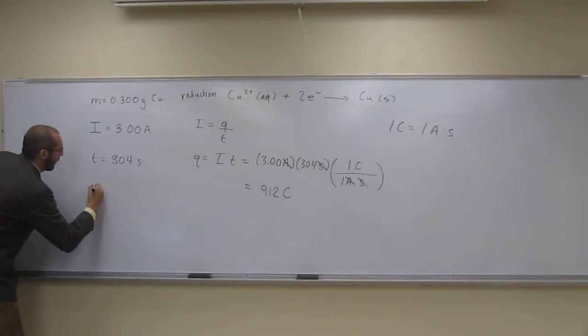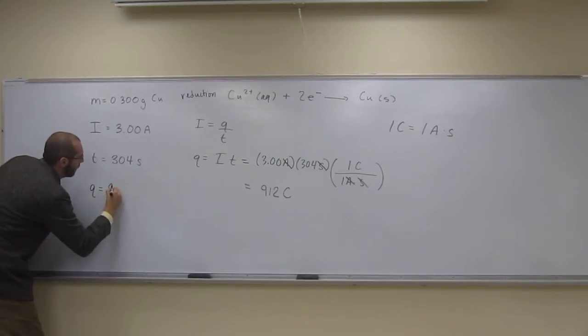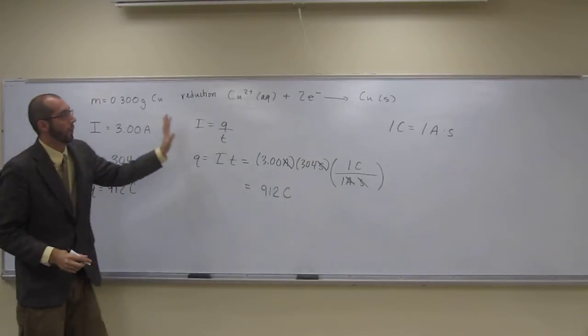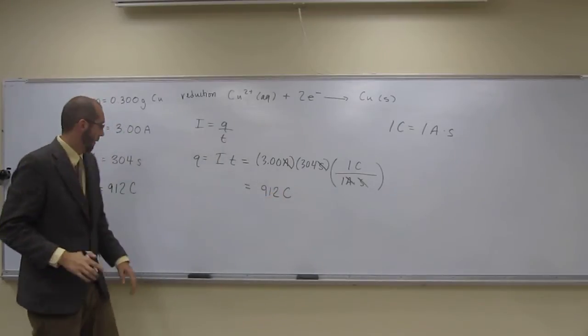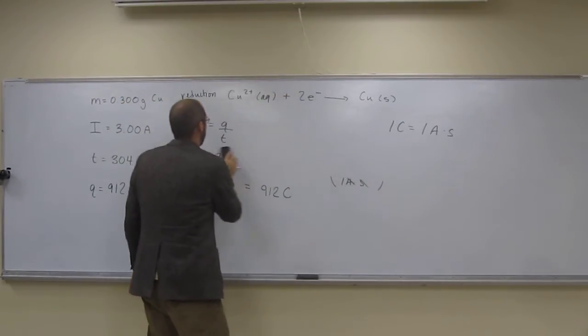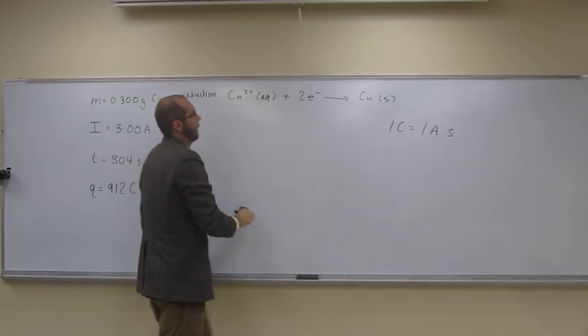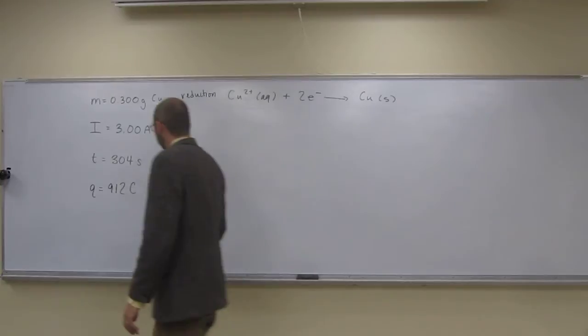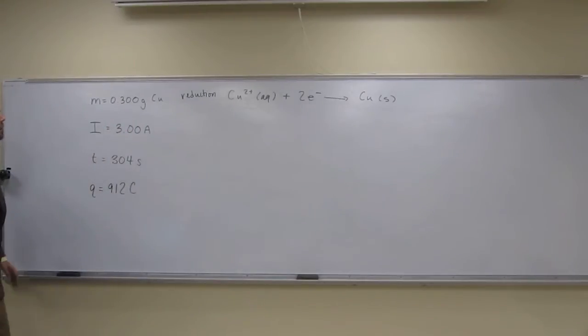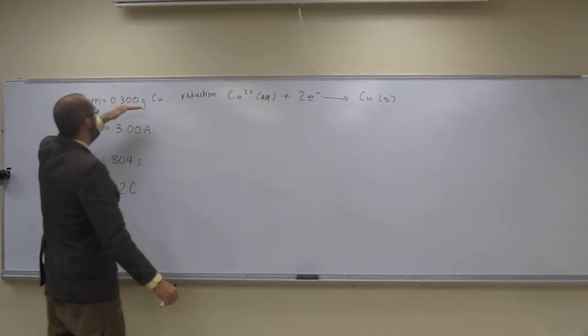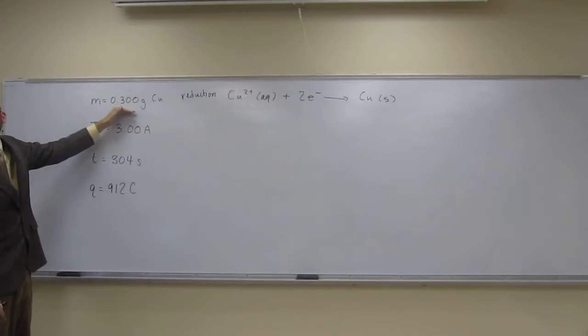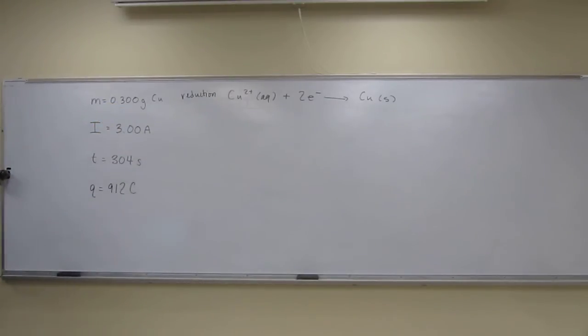So I'm going to put that over here, just so we won't lose that information. And I'm going to erase this portion of the board. So the other thing we know, well, we know the balanced reaction equation and we know the mass of the copper that was plated. So if we look up at the periodic table, the molar mass of copper is 63.55.